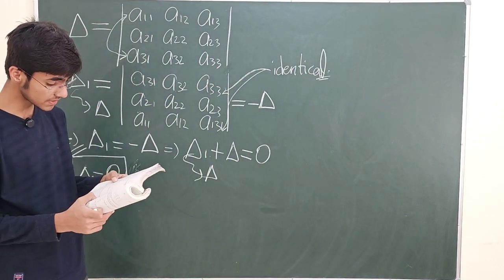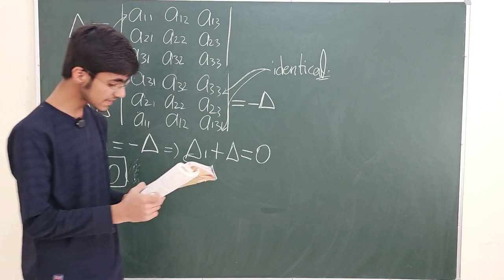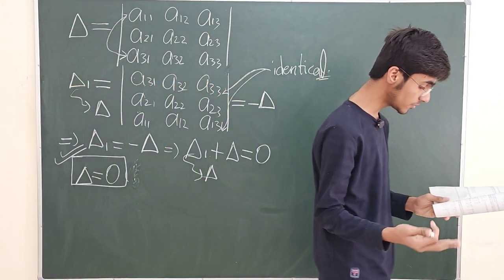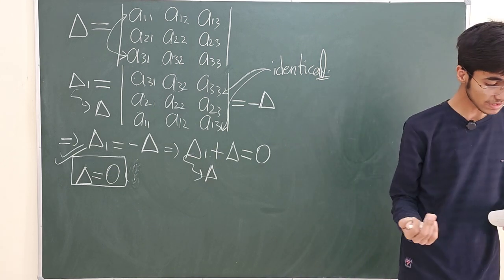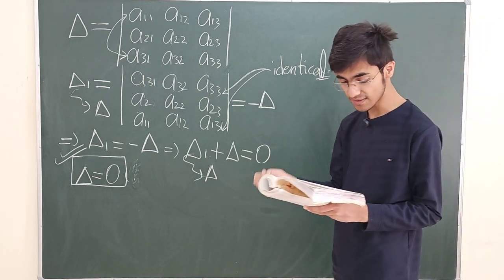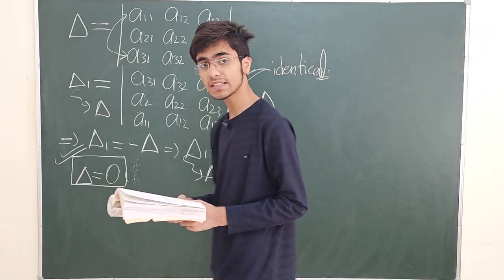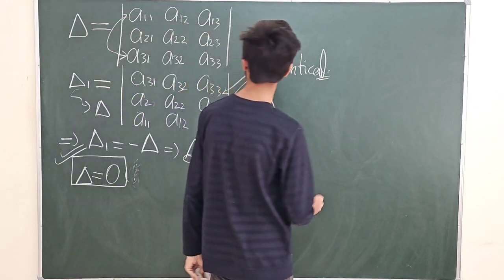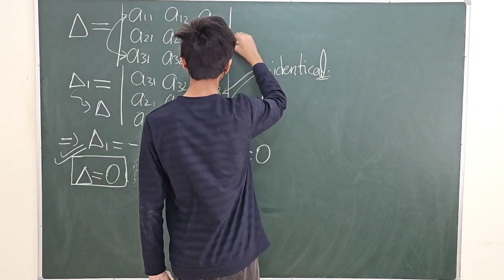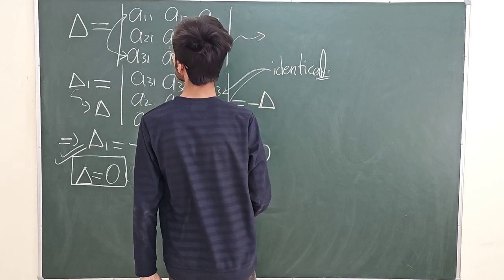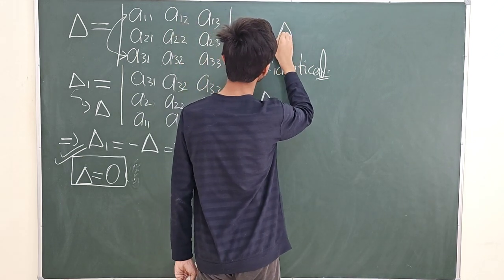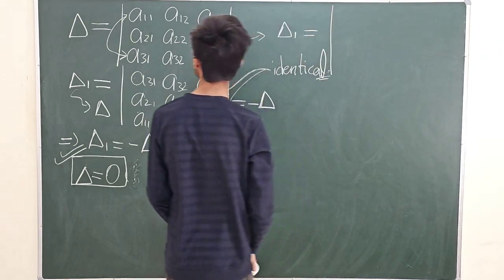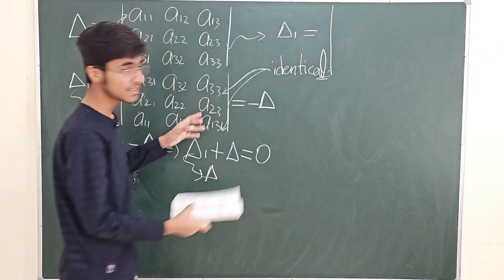That is Property 3. Now Property 4: if each element of a row or column of a determinant is multiplied by a constant k, then its value gets multiplied by k. Consider a square matrix determinant where every element of one particular row or one particular column is multiplied by scalar k.